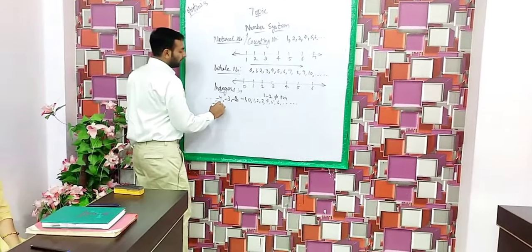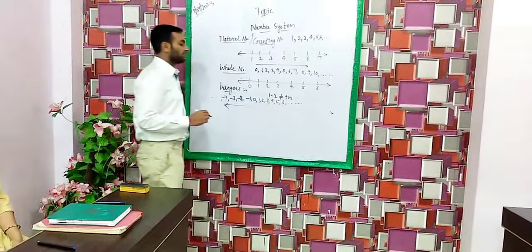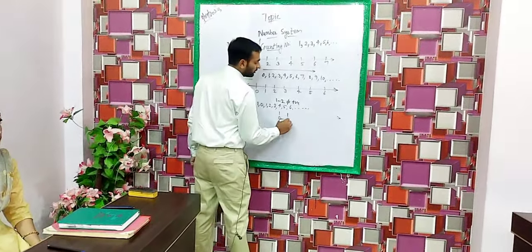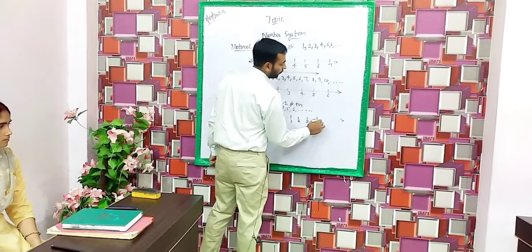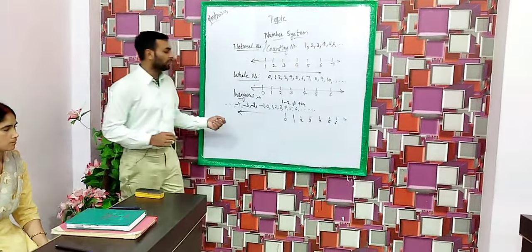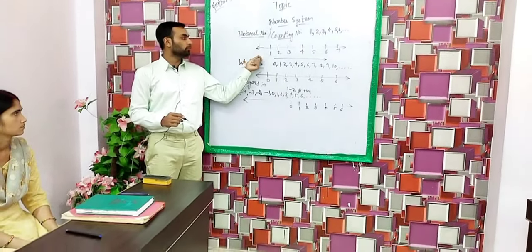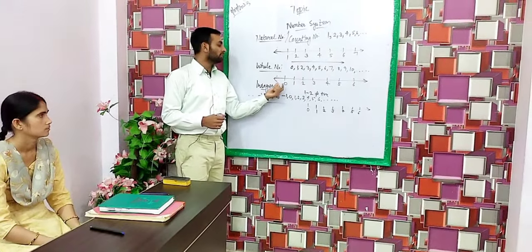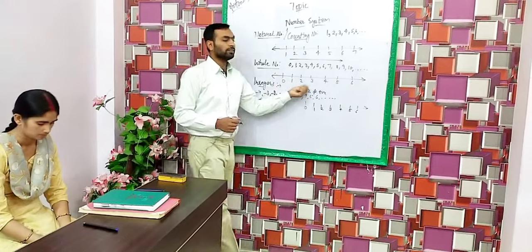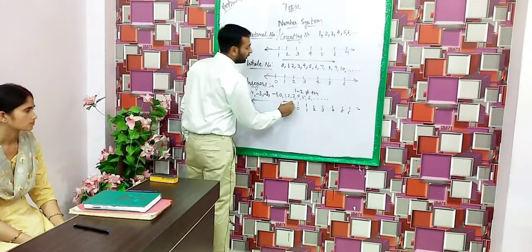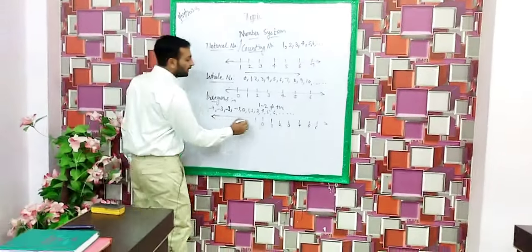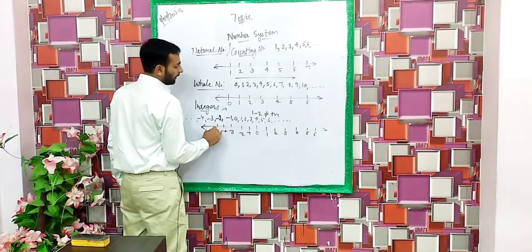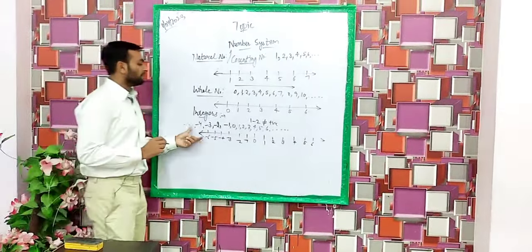These numbers are also represented on a number line — a line that can be extended in both directions. Taking 0 as the center, on the right side we use positive integers: 1, 2, 3, 4, 5, 6. On the left side of 0, we have negative integers: minus 1, minus 2, minus 3, minus 4, minus 5, minus 6 and so on. So this number line represents the integers.